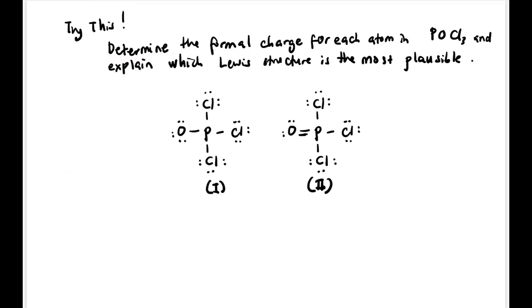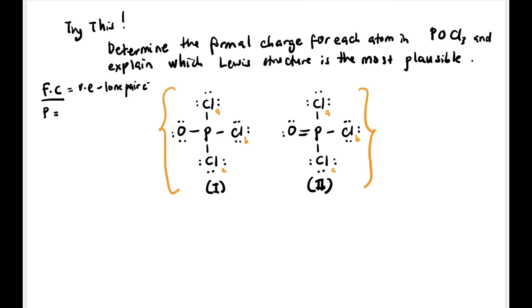Now let's try this question: determine the formal charge for each atom in POCl3 and explain which Lewis structure is most plausible. There are two structures. Remember the formula: Formal Charge = Valence Electrons − Lone Pair Electrons − Number of Bonds. Label atoms A, B, C. For Structure 1: P — 5 valence − 0 lone pair − 4 bonds = +1. O — 6 − 6 lone pair − 1 bond = −1.